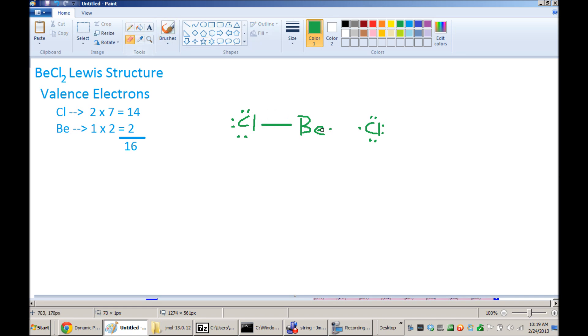I can do the same thing for the other chlorine and the beryllium. So I just replace those two non-bonding electrons with a bond. Now its octet is completed as well.